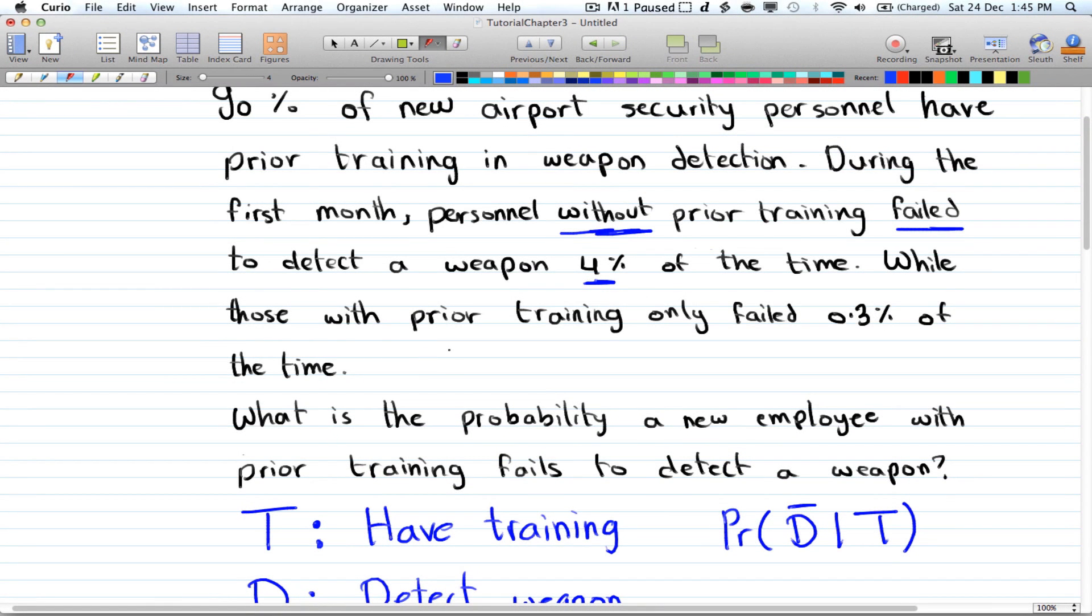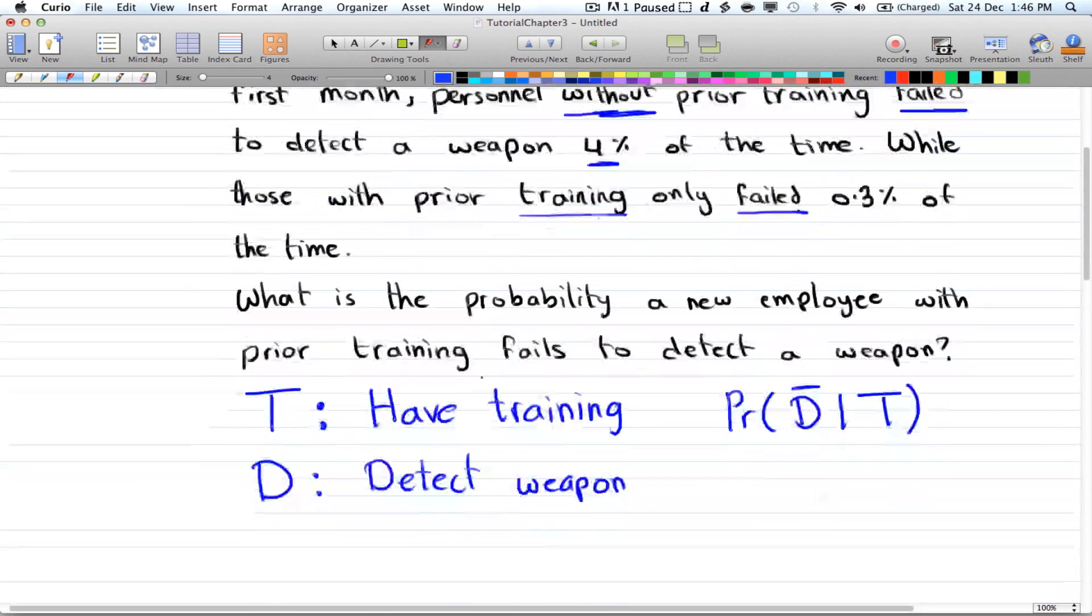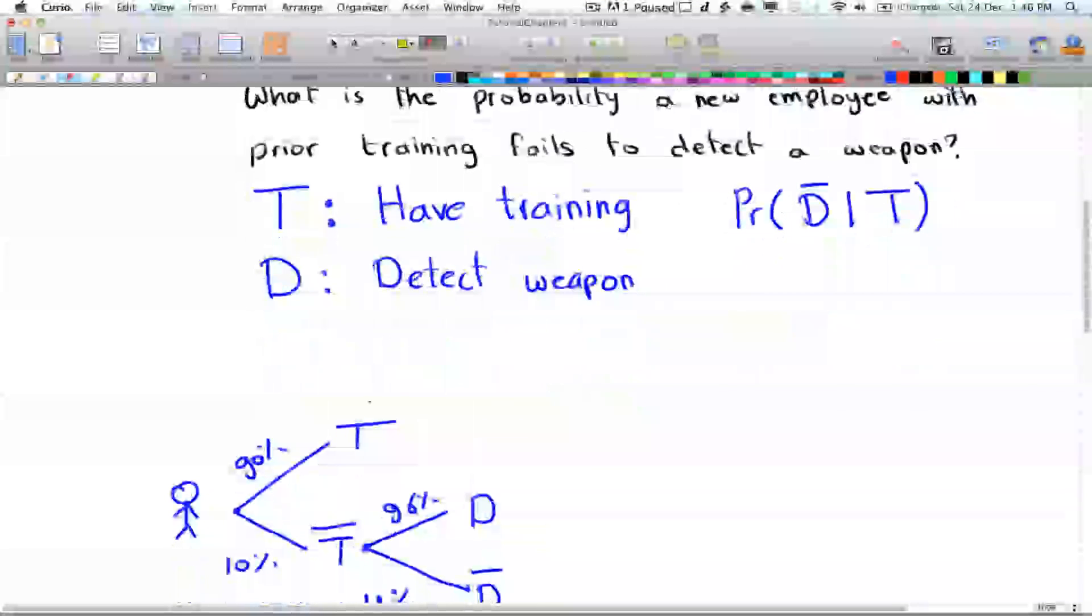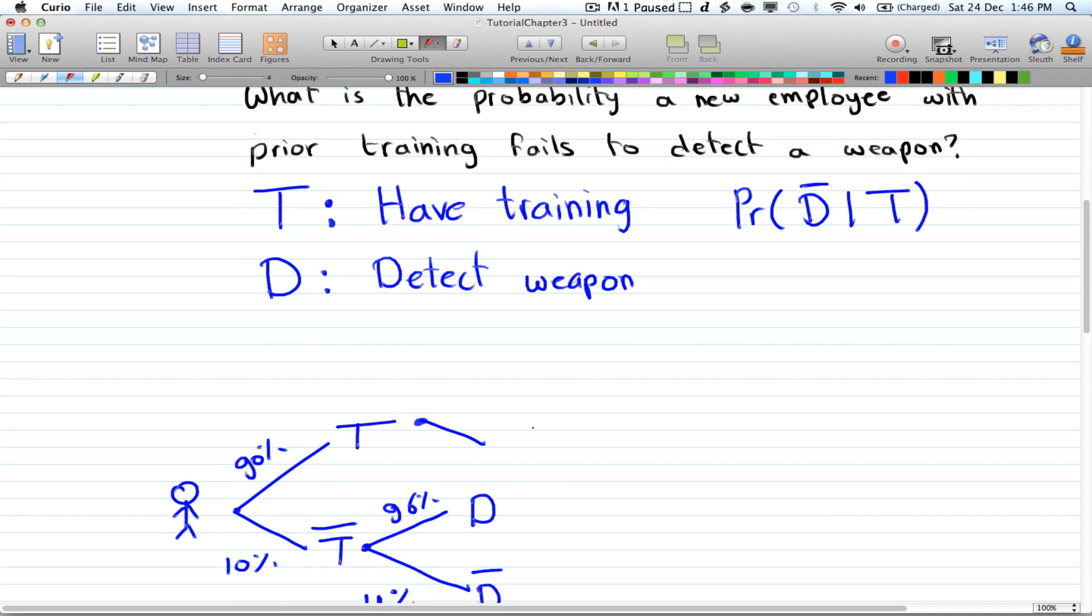Alright? So while those with prior training, so if you have training, only fail, so fail 0.3% of the time. So if you have training you're going to fail 0.3%.